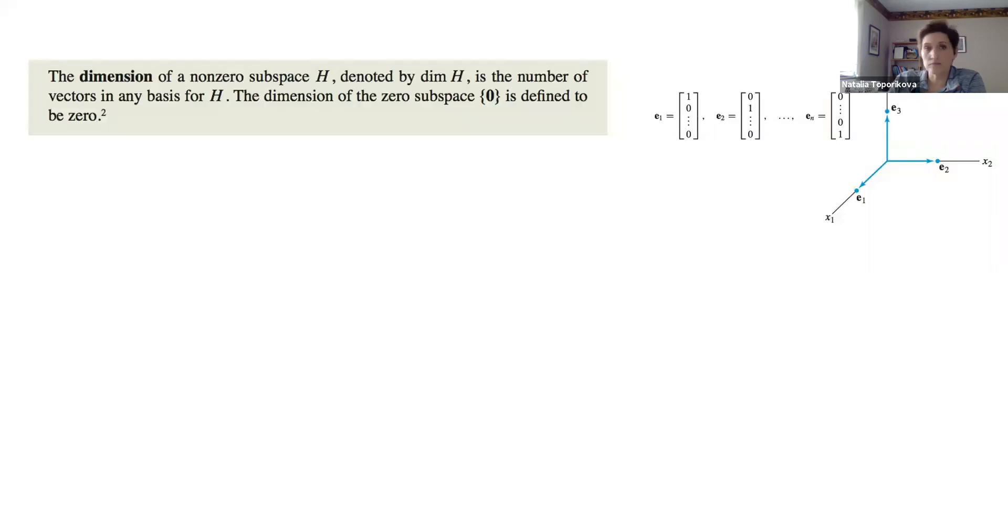Basically dimension is just the number of the basic vector in your subspace. For example, if we have a three dimensional space, we can express everything in terms of the three orthogonal vectors e1, e2, and e3.